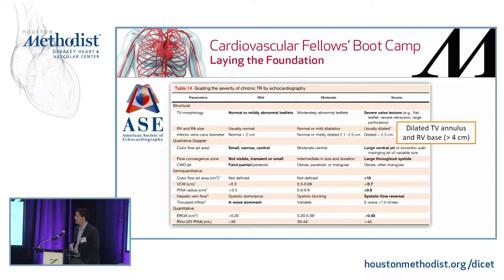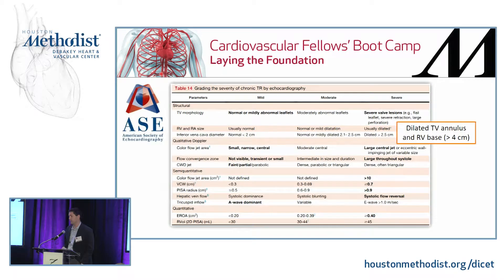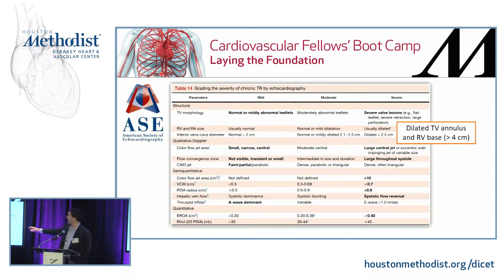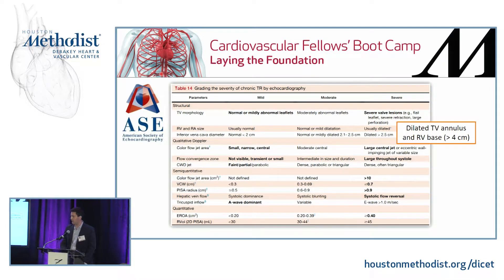These are the ways we grade TR, pulled from the ASC guidelines on valve regurgitation. One addition is to actually measure the tricuspid annulus or the base of the right heart — four centimeters is a nice easy cutoff to remember; the actual guideline cutoff is 4.1 cm at the base of the RV. This puts a number on RV dilation, which is useful when making a case for intervening on the tricuspid.